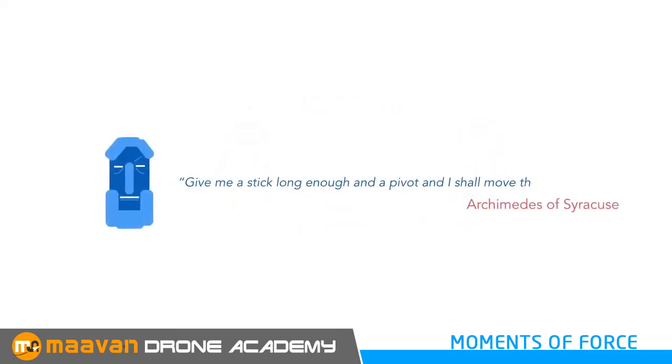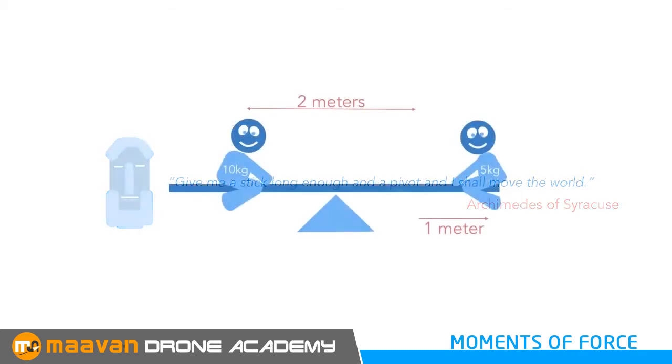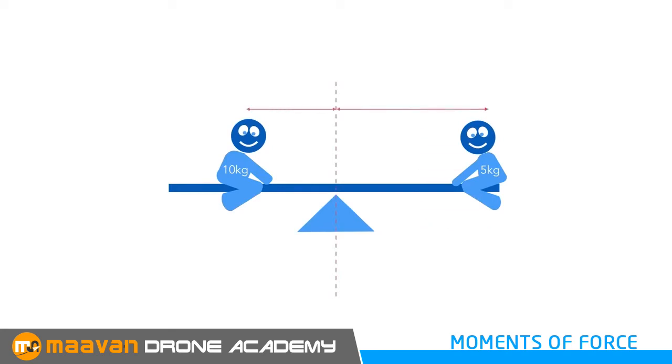Archimedes once said, give me a stick long enough and a pivot and I shall move the world. What all this means is that little force can achieve bigger results given a long enough arm to create the moment of force that is needed. Mathematically, a moment is defined as force multiplied by the arm. Going back to our seesaw analogy, we can prove that the lighter child is able to balance the heavier child by using a longer arm to achieve the same moment of force.